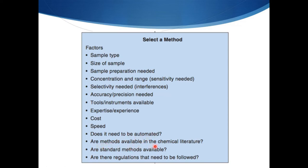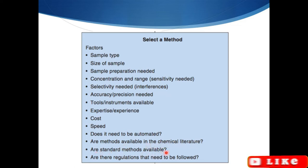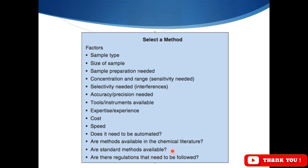Are methods available in the chemical literature? This is a very important factor — whether the method you are using has already been published or you are going to make a new protocol. Standard methods are available and that is very good, but sometimes we have to be innovative. Also, are there regulations that need to be followed? We need to confirm that the methods we are going to use are legally approved. We have to consider all these facts and figures in order to perform the analytical process.